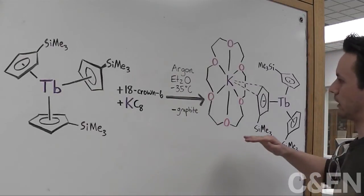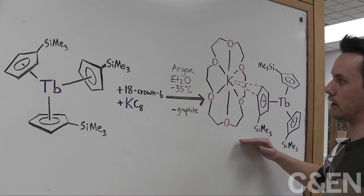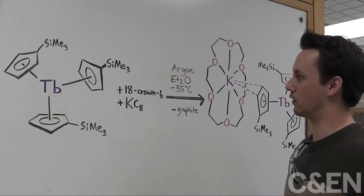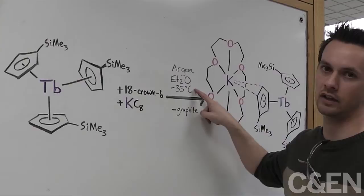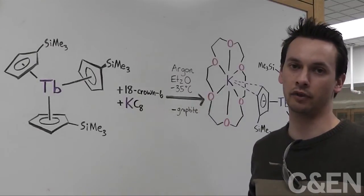Now, the issue with this reaction is the product is very temperature unstable, and you must do the reaction under argon at minus 35 degrees Celsius if you want to isolate the product.